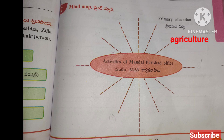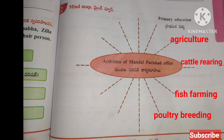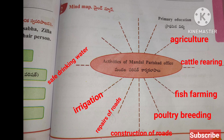Activities of Mandal Parishad: Agriculture, cattle rearing, fish farming, poultry breeding, construction of roads, repairs of roads, irrigation, safe drinking water, health, women and child welfare, sanitation.